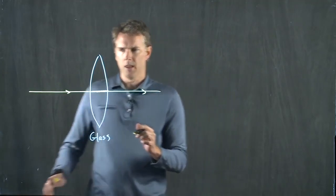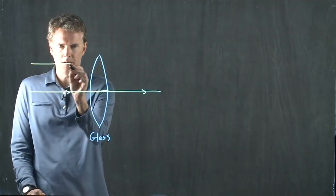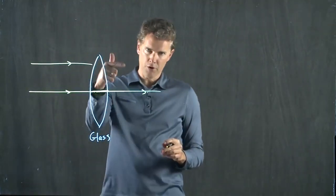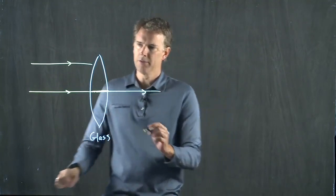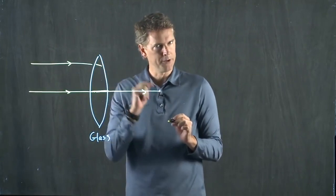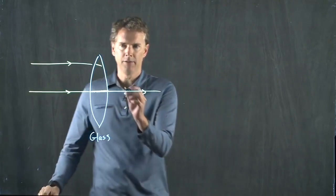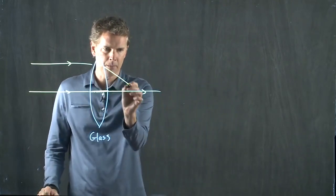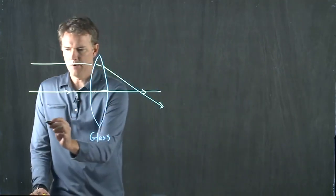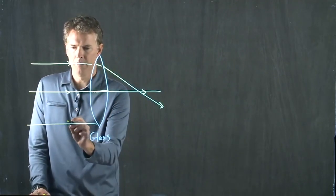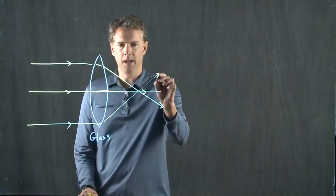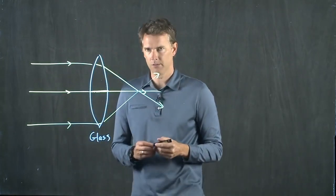What about a light ray that comes in near the top of the lens? This glass is curved right there and so it's going to bend down just a little bit, and then it sees another curve on the other side and bends down a little bit more. A light ray on the bottom side sees a curve, it bends a little bit there and then it bends more.